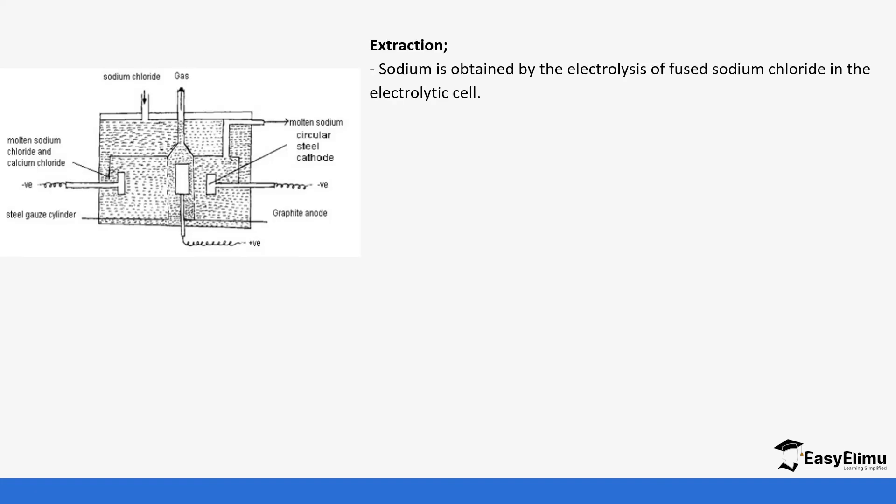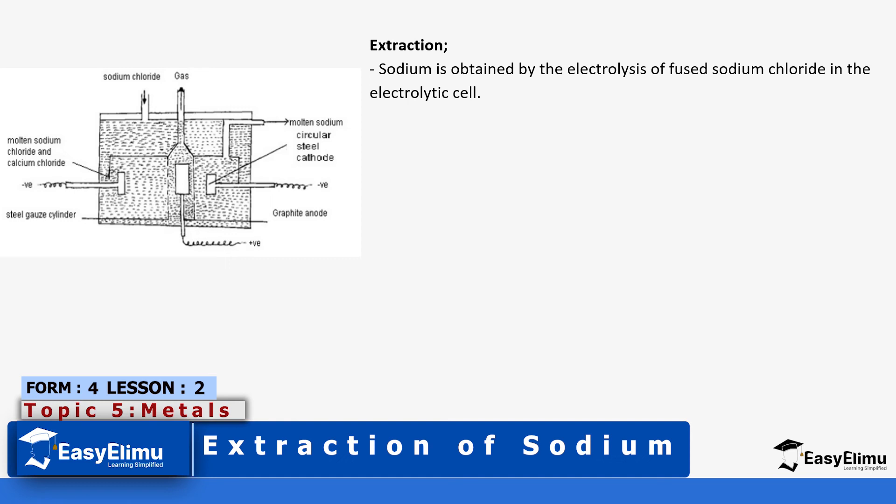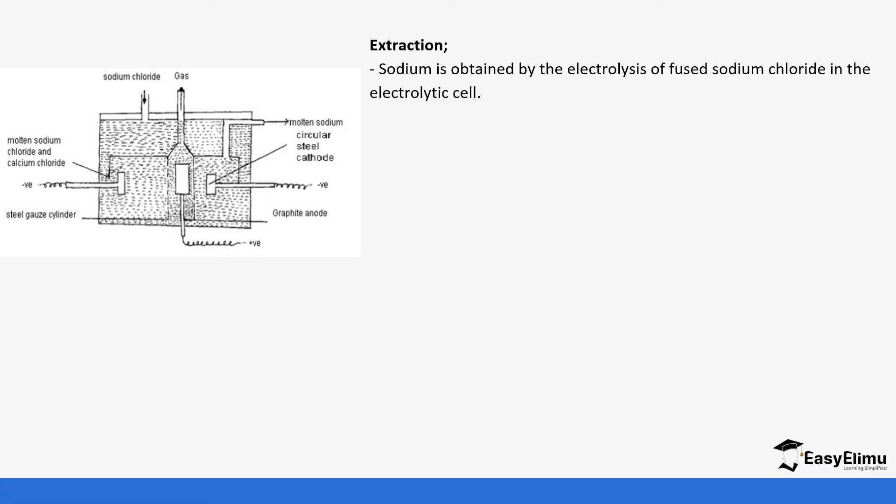The extraction of sodium is obtained by electrolysis of fused sodium chloride in the electrolytic cell. Sodium is high in the reactivity series so it uses electrolysis as a method of extraction. It doesn't use reduction method because it's not reduced by common reducing agents. Let's look at how the process occurs.